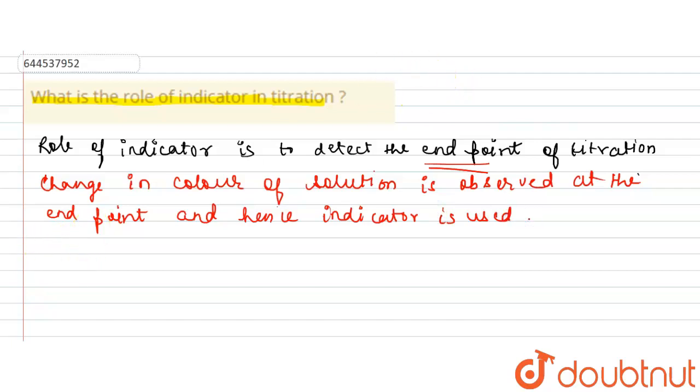Now there are different types of indicators like methyl orange. Methyl orange indicator shows the change in color in pH range of basically 3.5 up to 10.